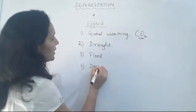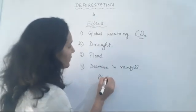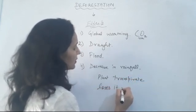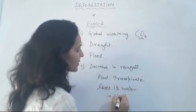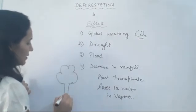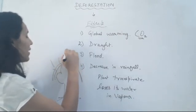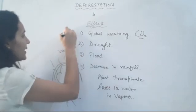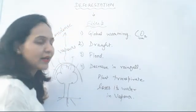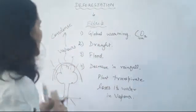Another effect is a decrease in rainfall. Plants lose water in the form of vapors — that is known as transpiration. The water evaporates from the plant area, goes into the atmosphere, condenses to form clouds, and precipitates as rain. If this process does not occur due to deforestation, there is a decrease in rainfall.